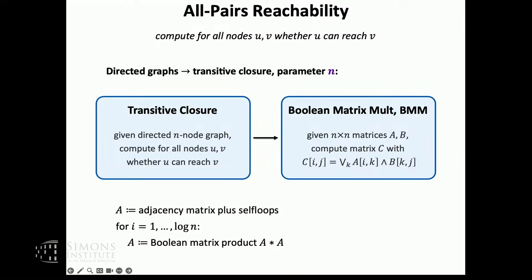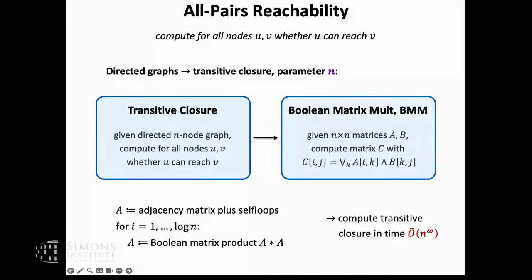There are just log n Boolean matrix products here. The Boolean matrix product we can compute in time n to the omega, so with just one more log factor — hidden in the O-tilde notation — we can compute the transitive closure. Omega is defined as the optimal exponent of Boolean matrix multiplication, and this is the running time that comes out.